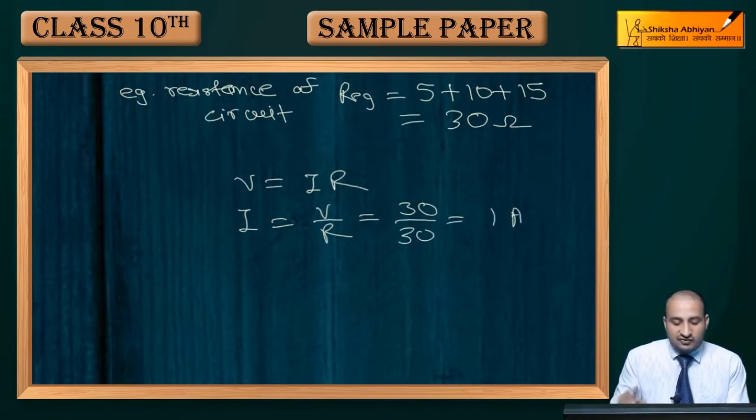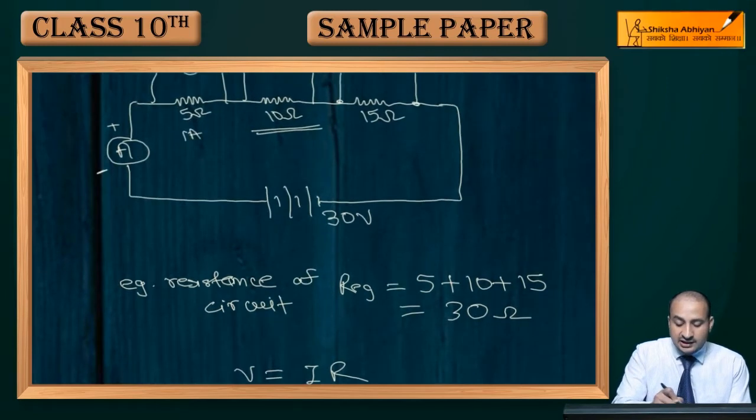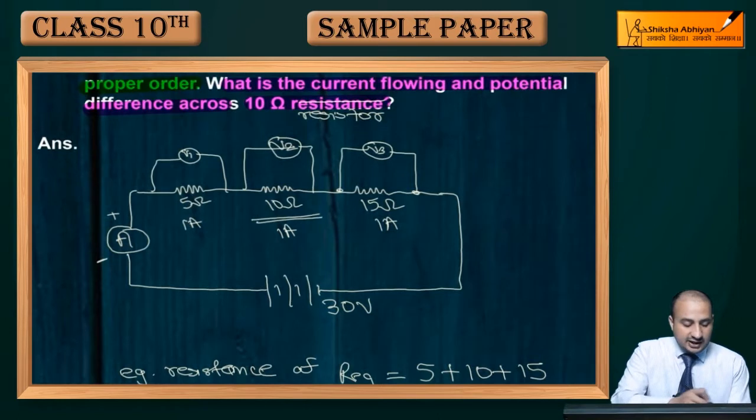So current here will be 1 ampere, here, here, and here. Now see this particular part. Current is 1A.